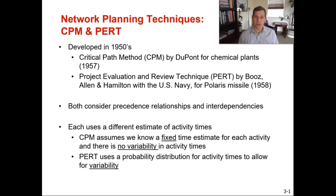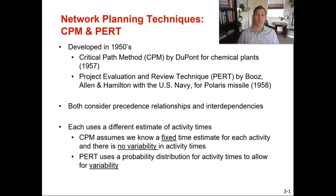PERT uses a probability distribution for activity times to allow for some variability. It assumes that there's a pessimistic time, a most likely time, and an optimistic time — so your worst case, your normal case, and your best case scenarios. For that same project, if you assume it's going to take 16 weeks, PERT will tell us what's the probability that it actually happens in 16 weeks — is there a 95% probability or a 70% probability that it's going to be on time? And then how do we correct it? What activities do we look at to try and improve that probability?